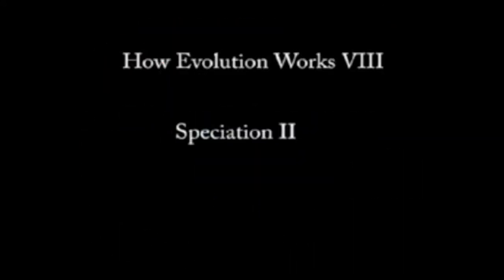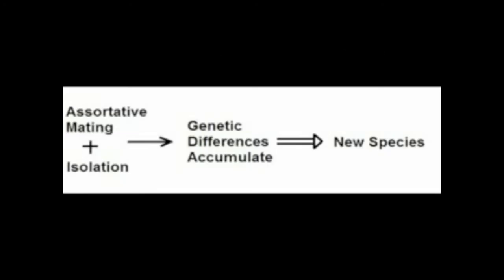To refresh from last time, there are several steps in the process of the formation of a new species. Assortative mating develops, which is where large organisms will mate with large organisms, small organisms will mate with smaller ones — this is within a species. It's basically the tendency for like organisms to mate with other like organisms.